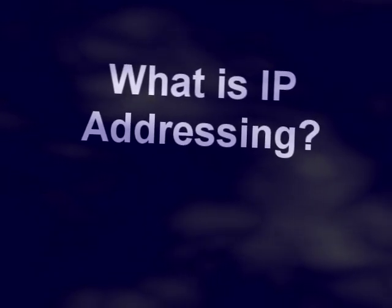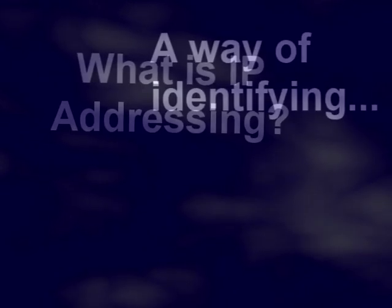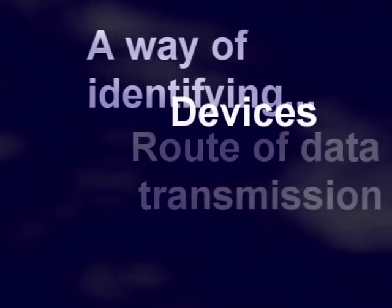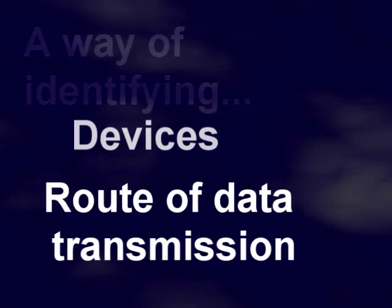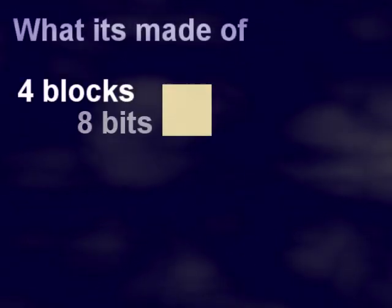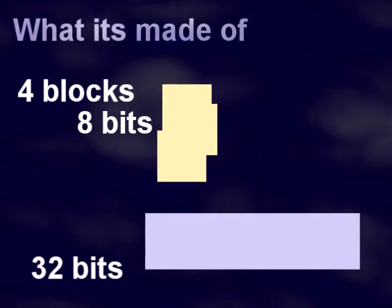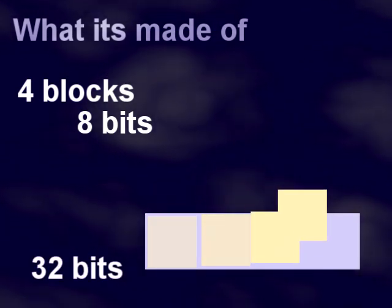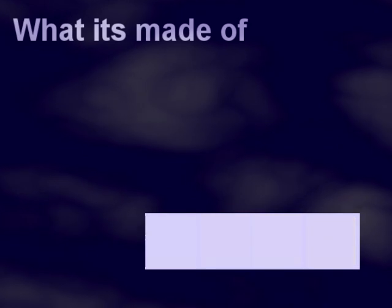IP addressing is a way of identifying a device on a network and the route of data transmission to reach another device. An IP version 4 address is made up of 4 blocks of 8 bits to make a 32-bit address. There are several classes of IP address from A to E.